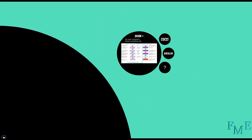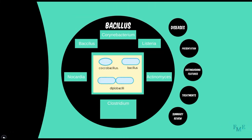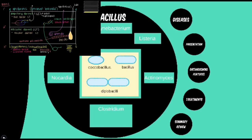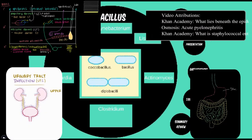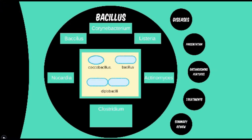Welcome to module 2. In this module we will concentrate on the gram-positive bacillus, or rod-shaped bacteria. In the last module we focused on gram-positive cocci. Those germs were focused more on diseases of the skin and soft tissue, the urinary tract, and the gastrointestinal tract, and even caused some neonatal diseases. This module will explore more of the systemic diseases and many affecting the nervous system.